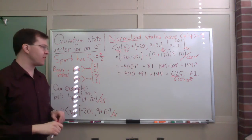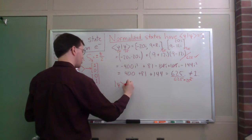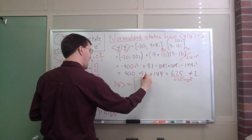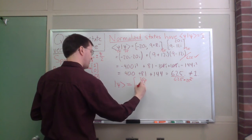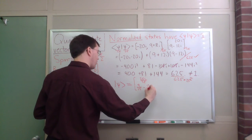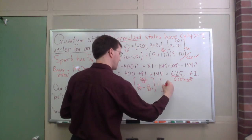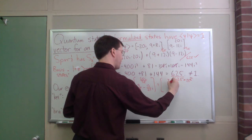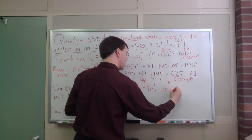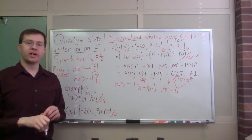So in fact, my normalized quantum state vector, my normalized psi should have been the vector 20i over 25, and then 9 over 25 minus 12 over 25i. That first one is actually 4 fifths, so maybe I'll simplify: 4 fifths i, and then 9 over 25 minus 12 over 25i. That is my normalized quantum state vector. And when I do future calculations with this, that's the vector I should be using.